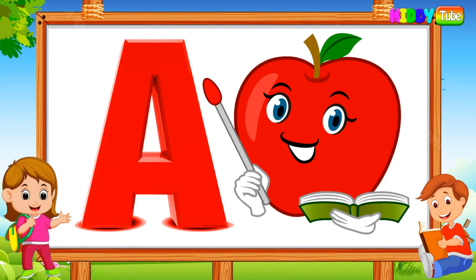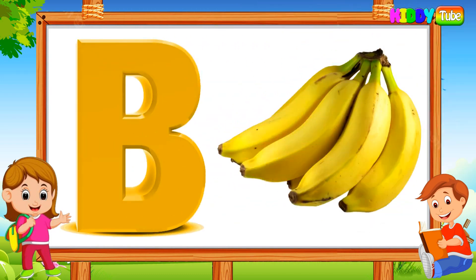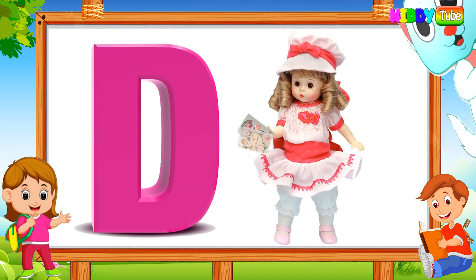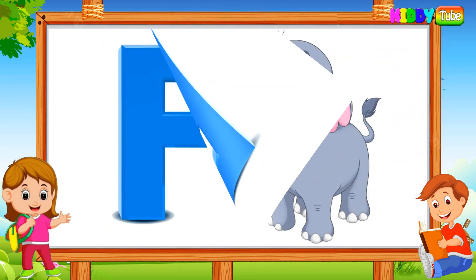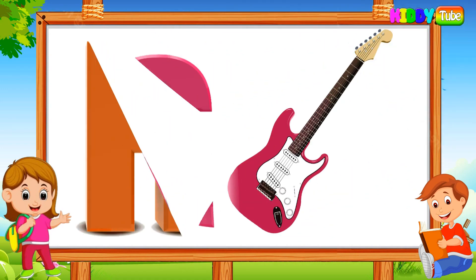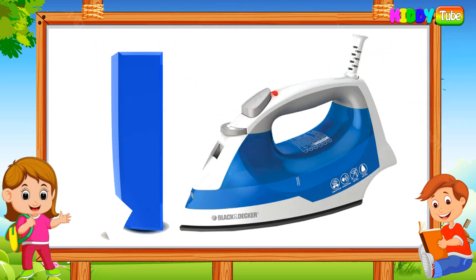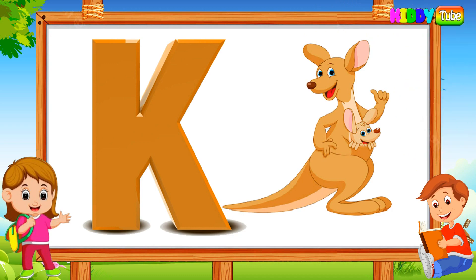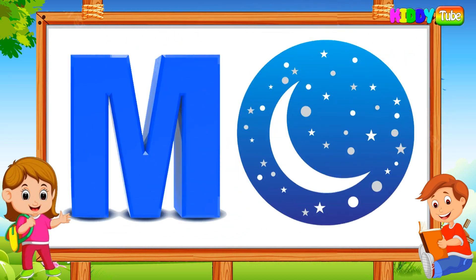A for apple, B for banana, C for cat, D for doll, E for elephant, F for fan, G for guitar, H for hat, I for iron, J for juice, K for kangaroo, L for lamp, M for moon.